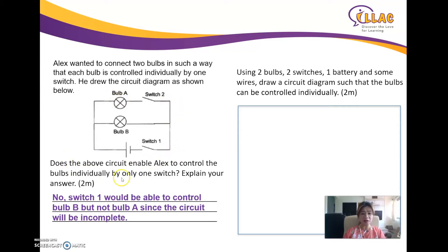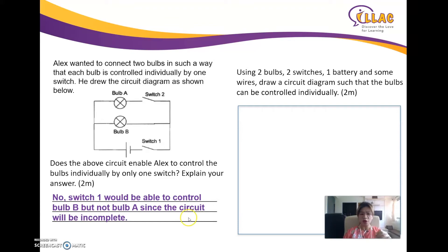The keywords here are 'circuit is closed' and 'circuit is open' — you can write it as 'circuit is incomplete' or 'circuit is open' or 'circuit is closed.' Switch one will control bulb B because it closes the circuit there. Bulb A will not light up because the circuit is incomplete — it is open. That's how you answer this kind of question.